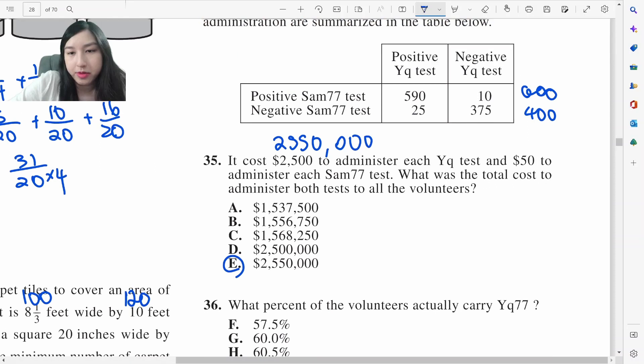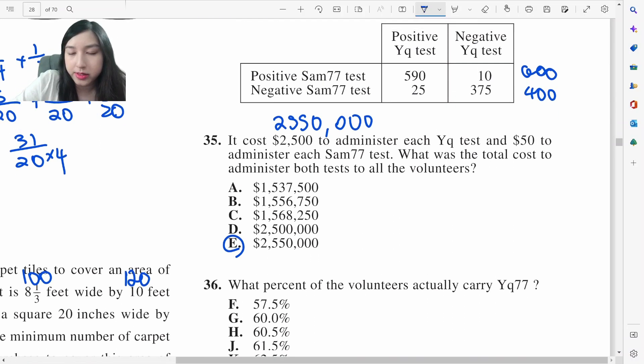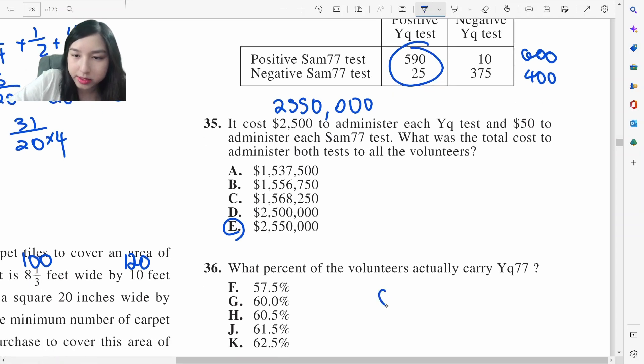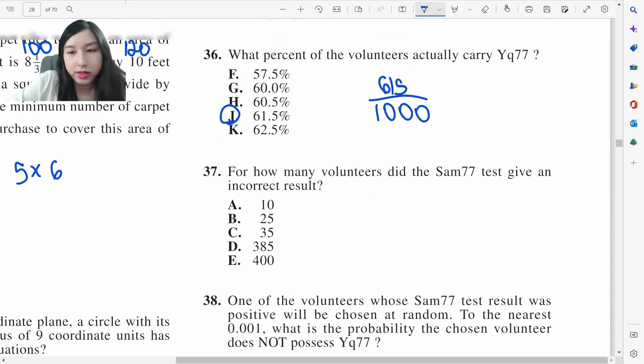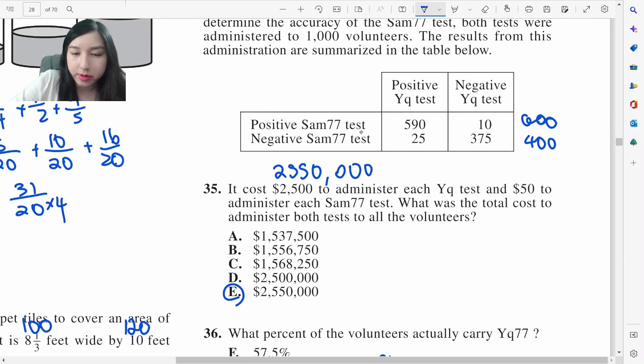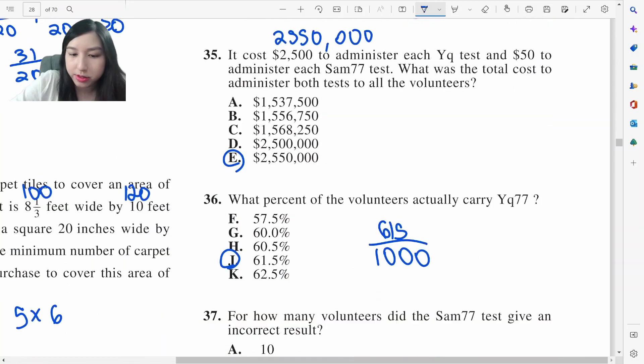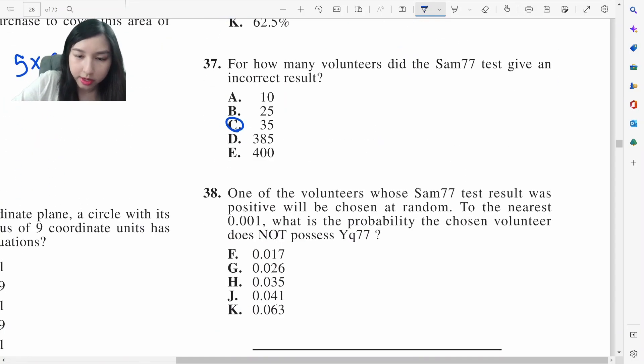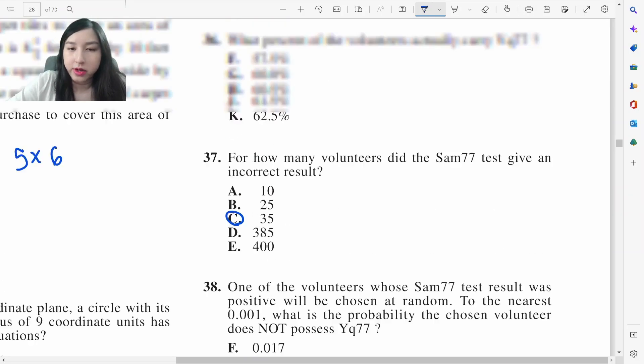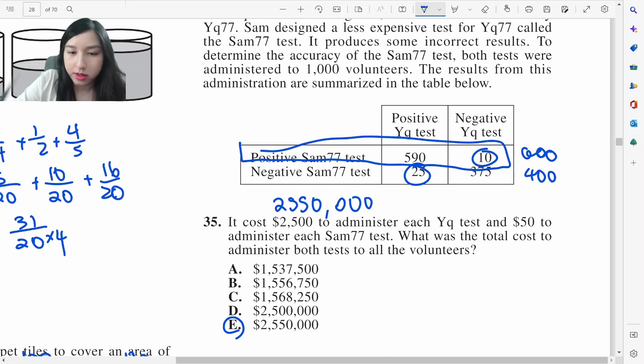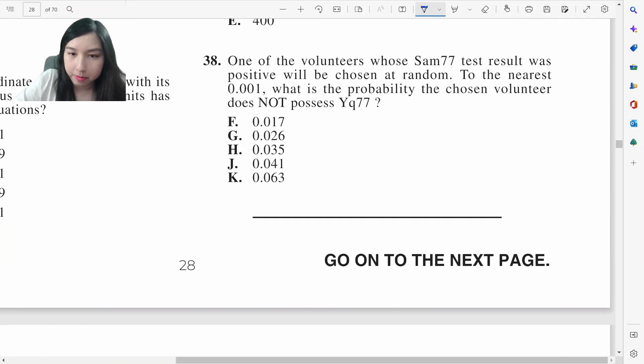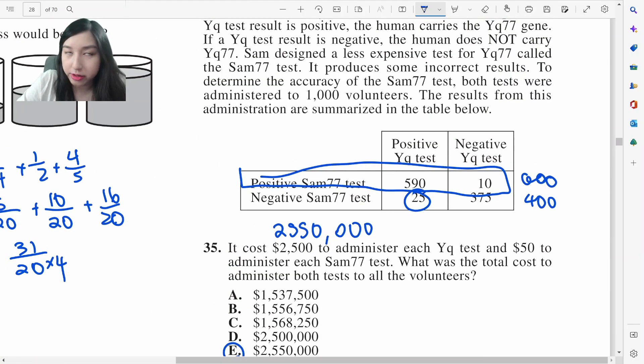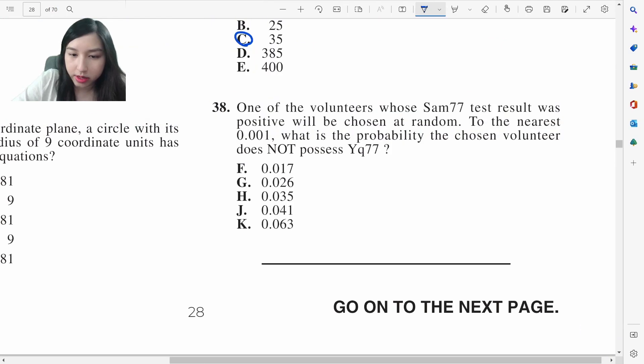What percent actually carry? If you're asking what percent, the positive, all of these people carry then. 615 out of 1000 people, it's going to be J then. How many volunteers did the test give an inaccurate result? So positive, but we got a negative, or negative, but you get a positive. That's going to be 35 in total. Of the volunteers which the SAM77 test was positive, so out of this group of people, which is 600 of them. What's the probability that they don't have it? 10 out of 600, and of course it's in decimals. 600, that's just 1 out of 60. It's going to be 0.0333 divided by 2, which is F.